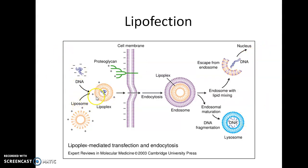DNA along with the liposome forms a lipoplex, which is taken up easily by the cell membrane through endocytosis, entering as an endosome; the DNA is then released when the endosome mixes with the lipid. This is one of the best methods of transfection and is the ideal choice for transfection of mammalian cells in vitro. It has also been used to deliver DNA into live animals by direct injection or intravenous injection.